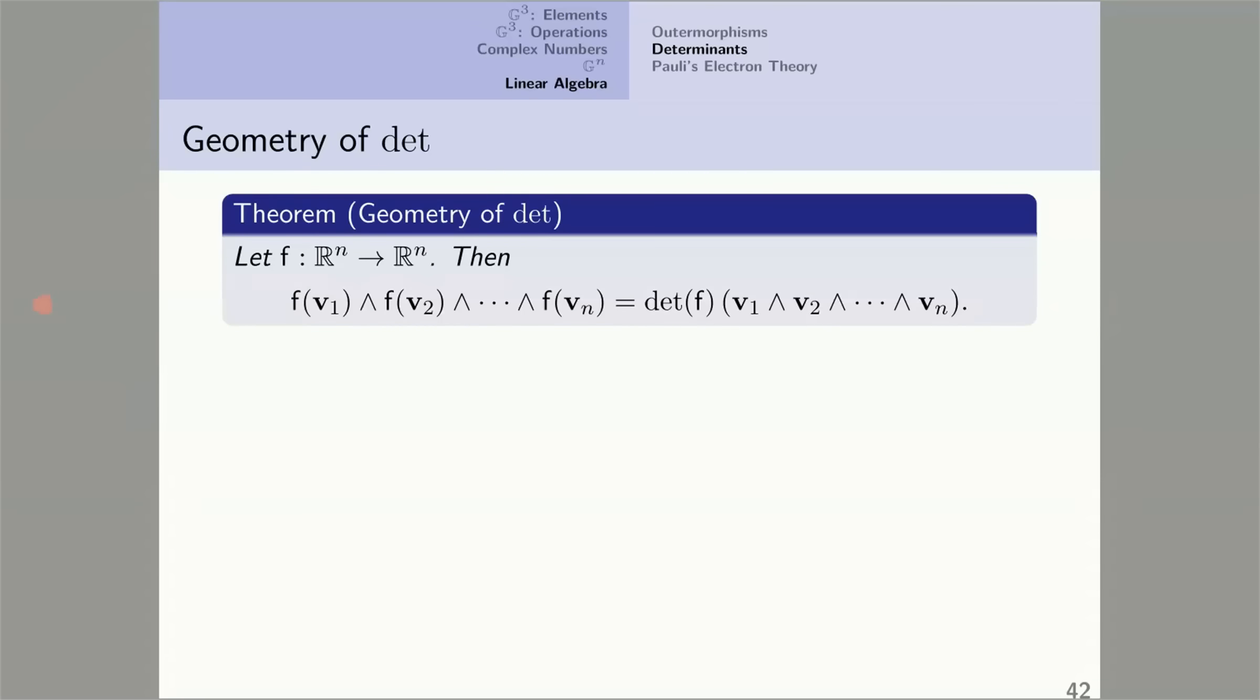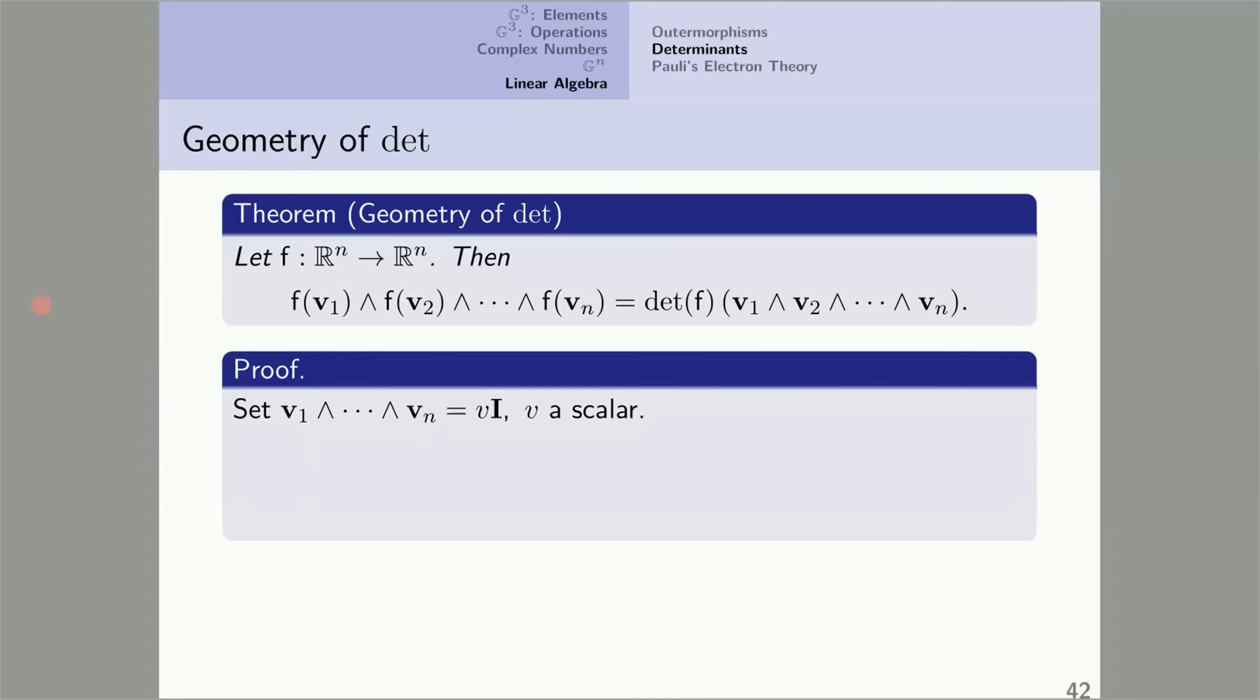Rather, it means that the two sides of the equation are equal as N-vectors. Here's the proof. The outer product of the N vectors is an N-vector, and so a scalar multiple of I, which I call V. And now we compute. Step one is the definition of an automorphism. For step two, I replace this outer product with V times I and pull the V out in front of the automorphism. F of I, by definition, is the determinant of F times I. So we have this. And once again, we have V times I, which I replace by this outer product.